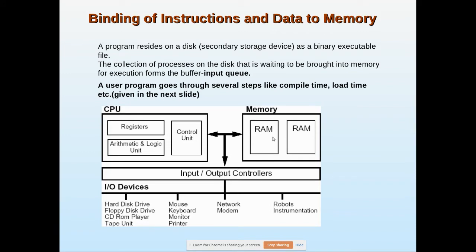The RAM is connected to external devices through IO controllers. Through the IO controllers, IO devices such as hard disk, floppy disk, CD-ROM, tape unit, etc. are connected. These are secondary storage devices. Normally we store programs in the C drive or D drive — we don't store them in main memory. After doing work, we save the program to secondary storage.